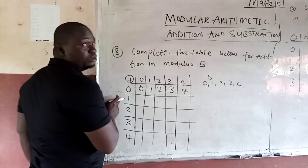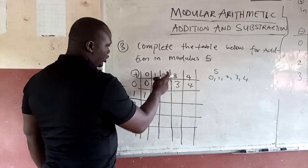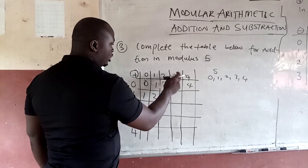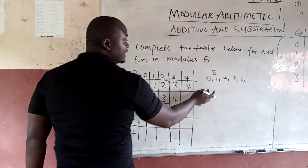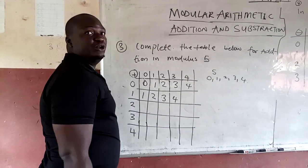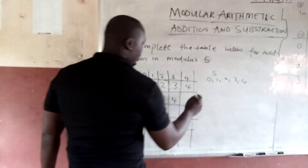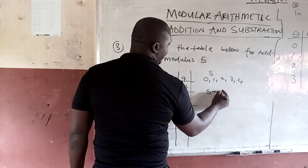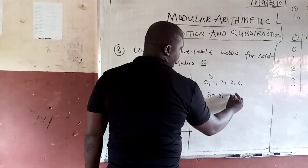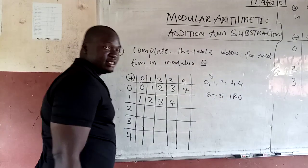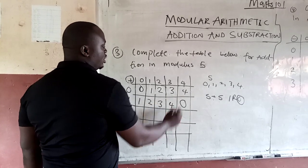Now we will go to the second column. 1 plus 0 is 1, 1 plus 1 is 2, 1 plus 2 is 3, 1 plus 3 is 4, 1 plus 4 is 5. I can't put 5 here. We have to divide it by 5. And 5 will go into 5 once, with a remainder of 0. So what I'm going to put here is 0.